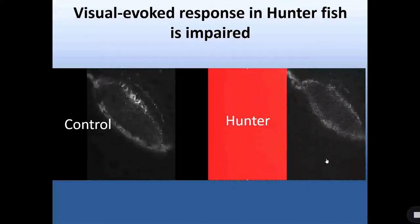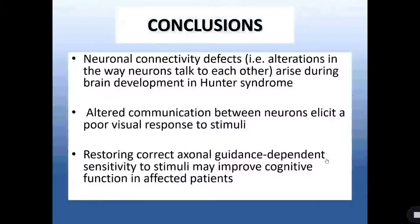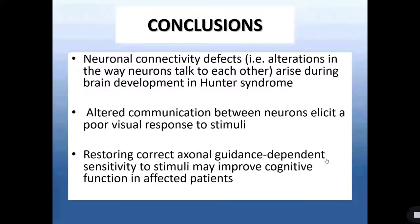This is interesting because these fish exhibited at the same time dysregulation of the axonal guidance molecules that we studied. Concluding, what we found in our investigation is that Hunter fish exhibit neuronal connectivity defects which arise during early brain development. The poor response was associated with an altered communication between neurons. In this fish, the lack of proper connections between neurons elicits the poor visual response to stimuli.